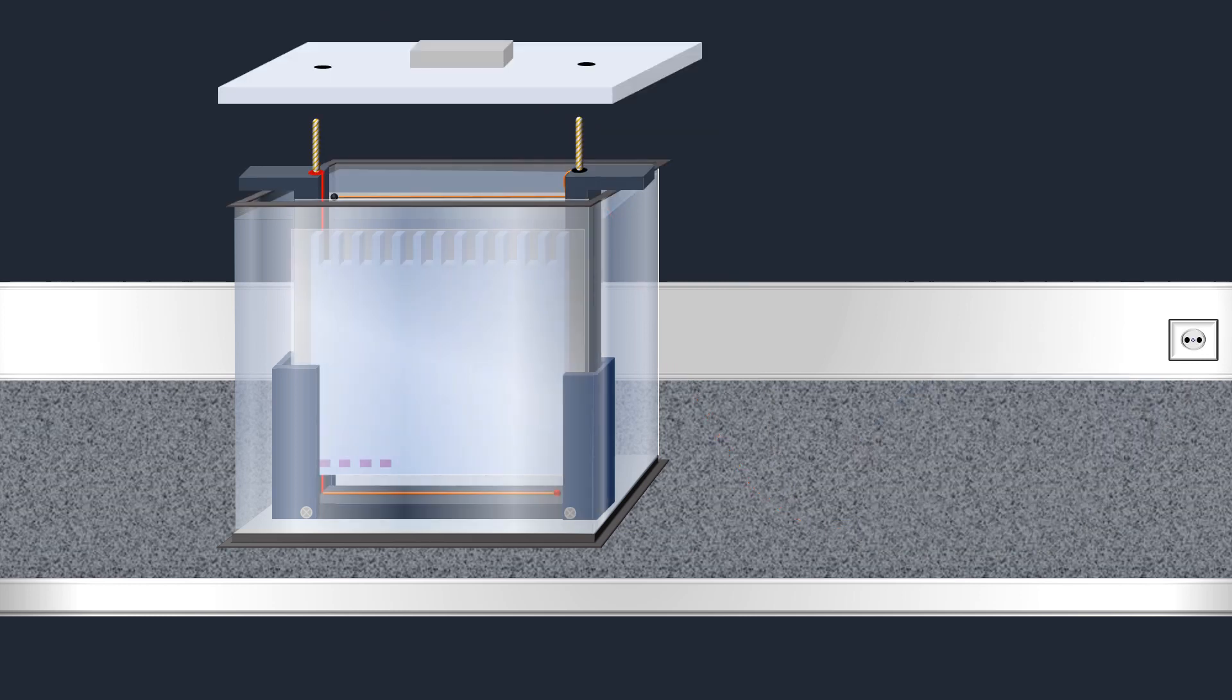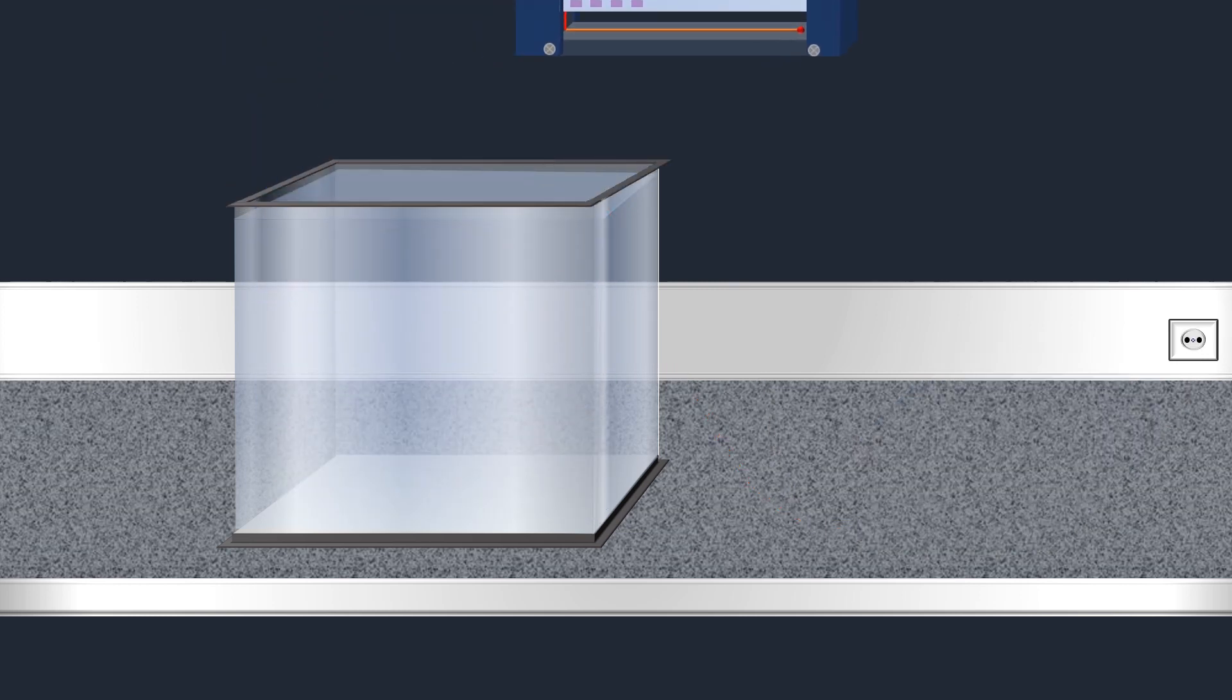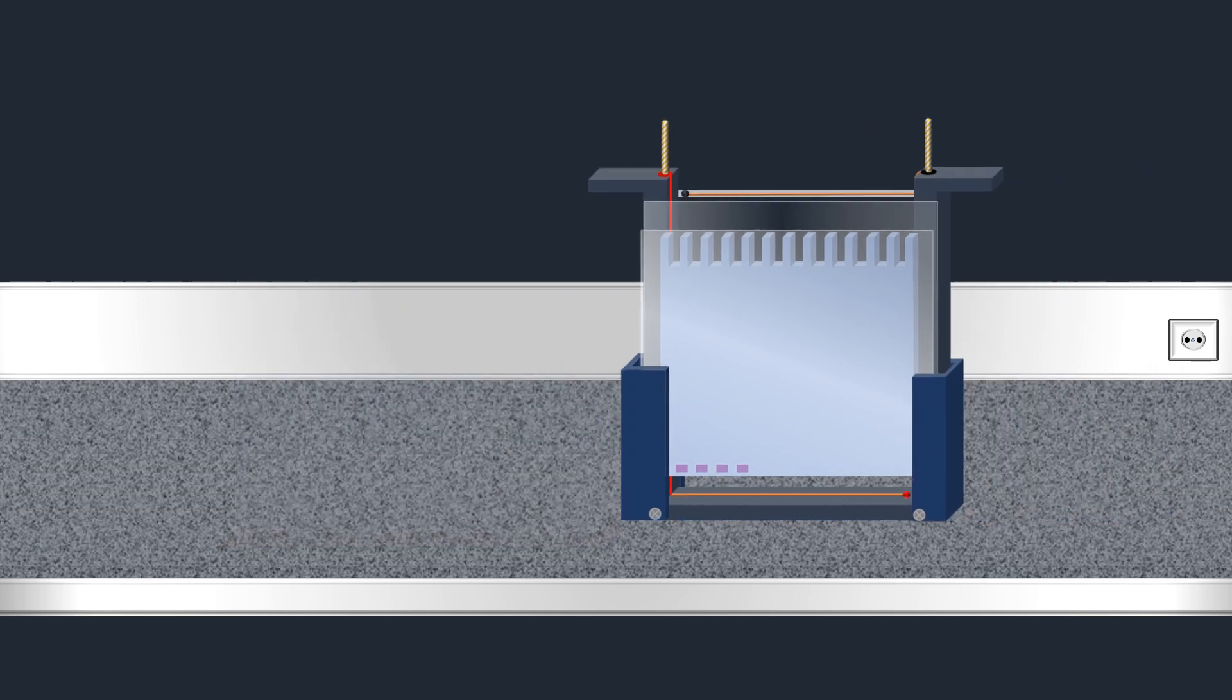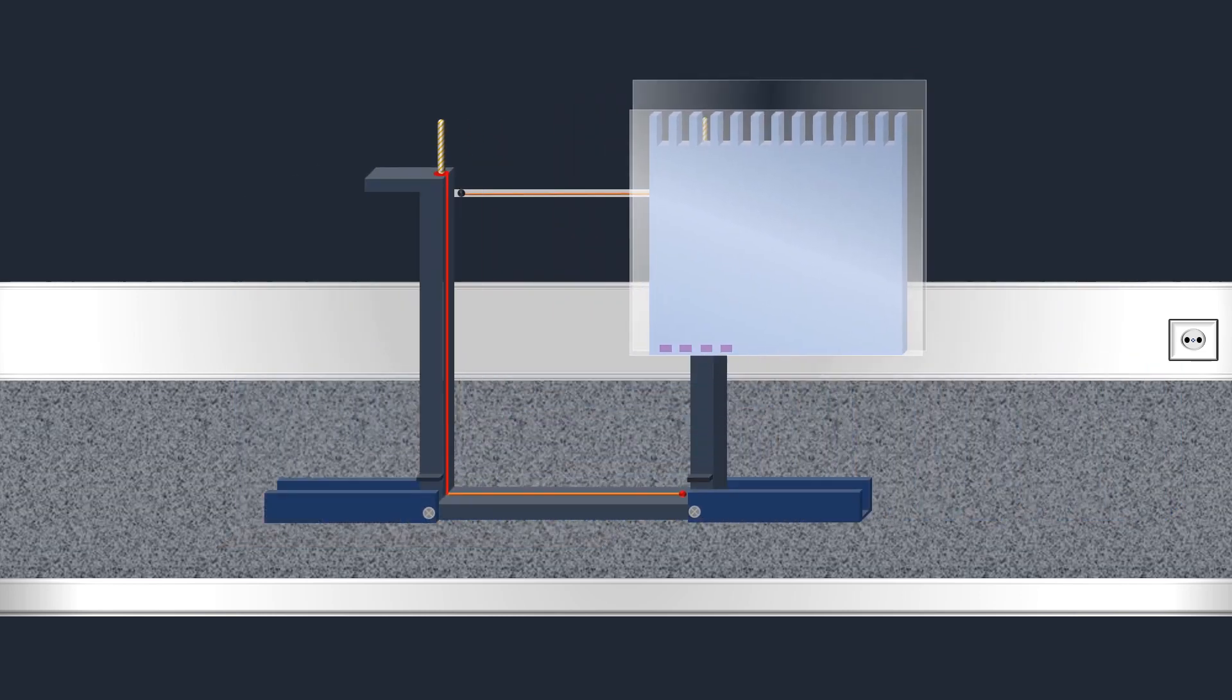At the end of the electrophoretic separation, all proteins are sorted by size and can then be analyzed by other methods, for example protein staining methods and immunological detection, such as the western blot technique.